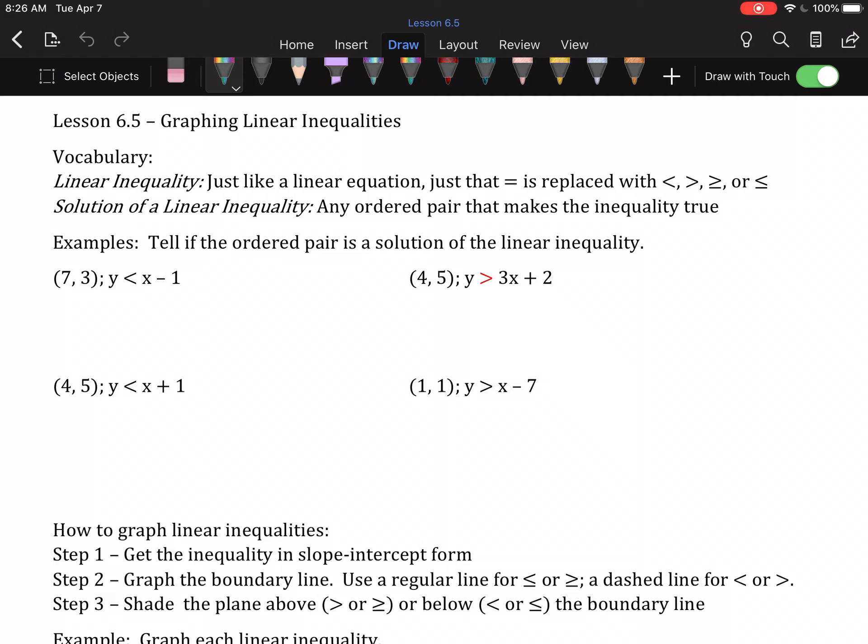So the first thing we've got to do is determine if an ordered pair is a solution. And all this is, is taking the ordered pair and plugging it in, taking those x and y values and substituting them in for x and y. Once we do that, we simplify and we determine if we have a true or a false statement.